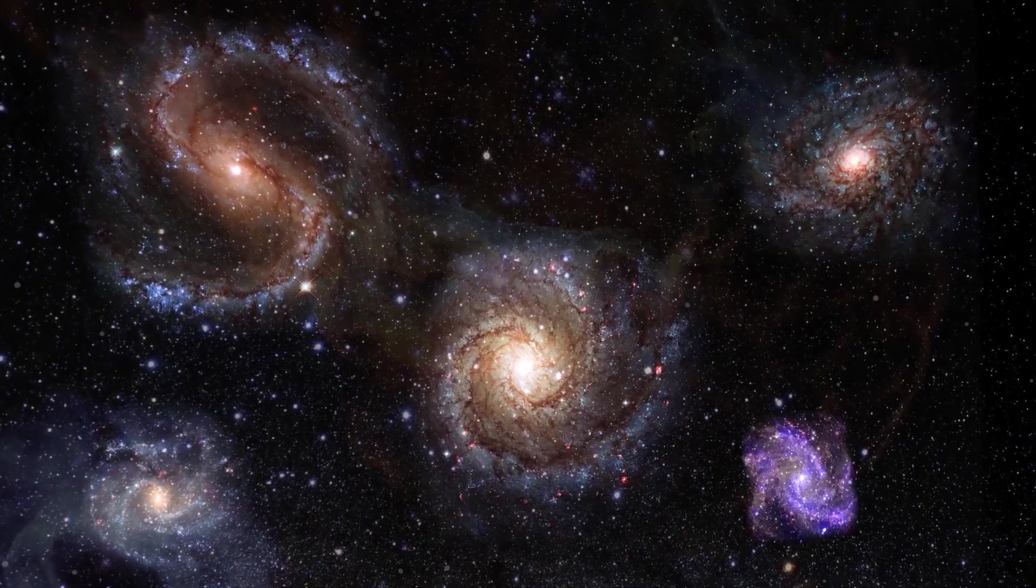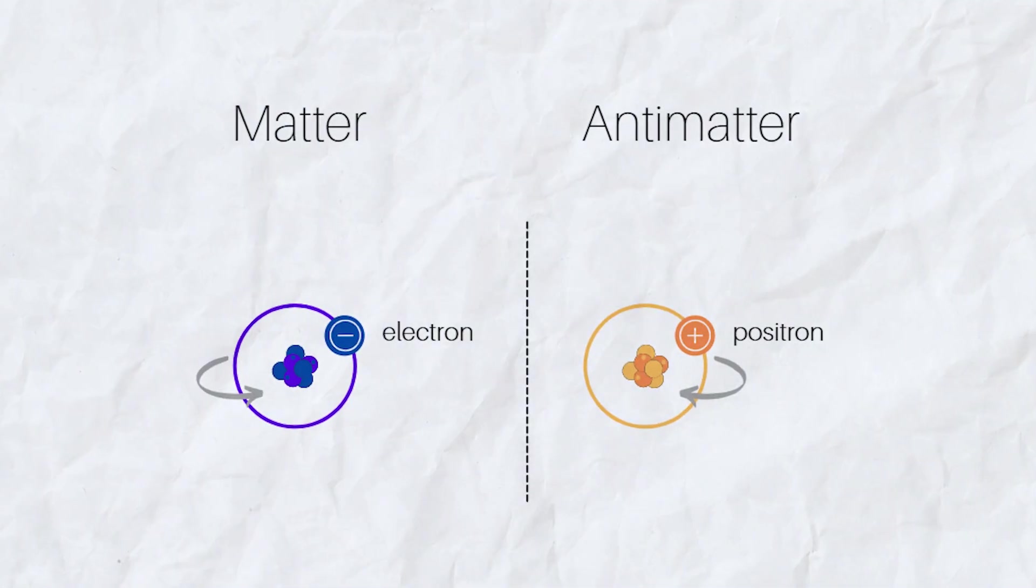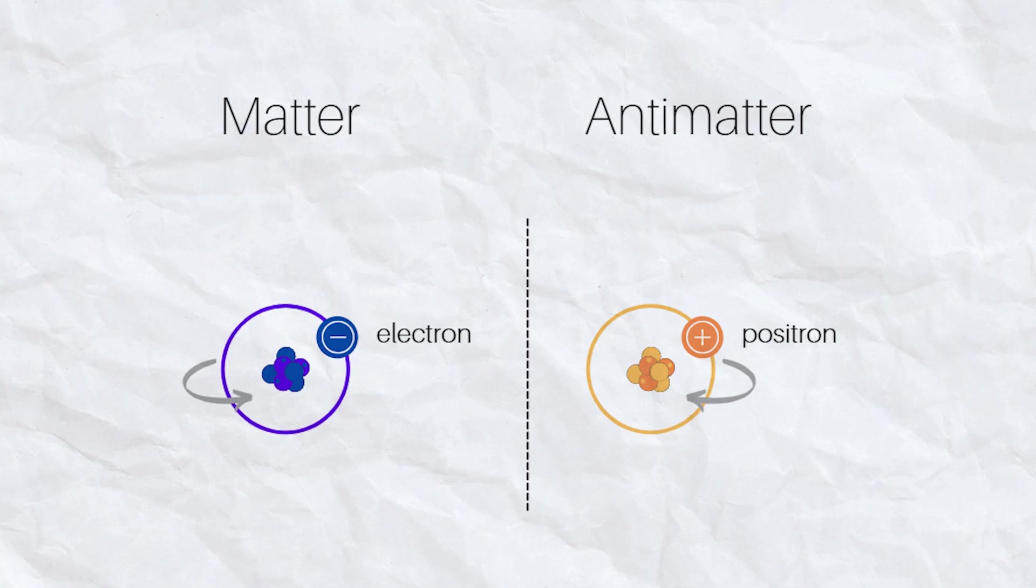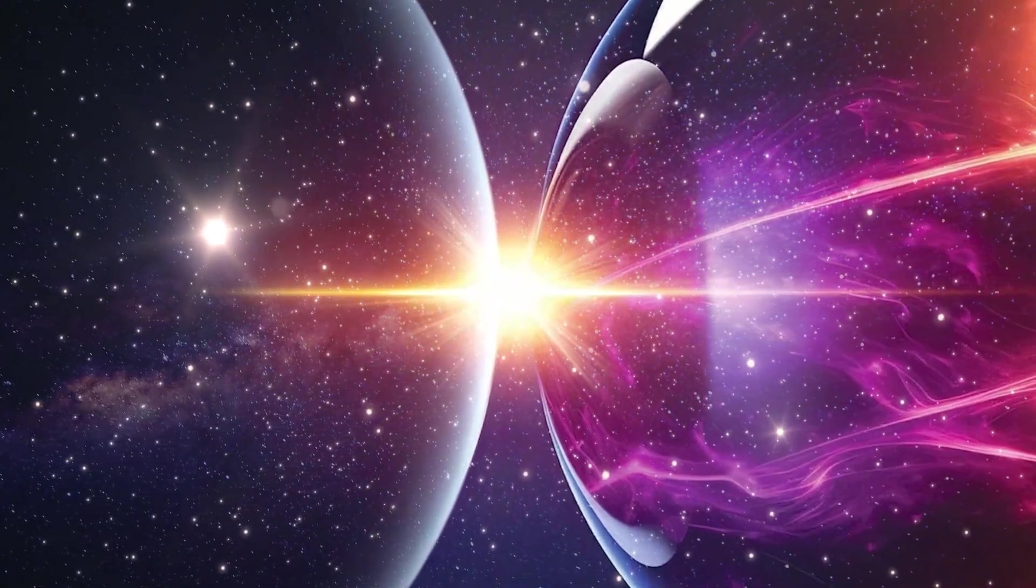One of the biggest mysteries scientists have about our universe is why there is more matter than antimatter. So first off, what is the difference between matter and antimatter? Well, matter is what everything around us is made of. Atoms, molecules, everything.